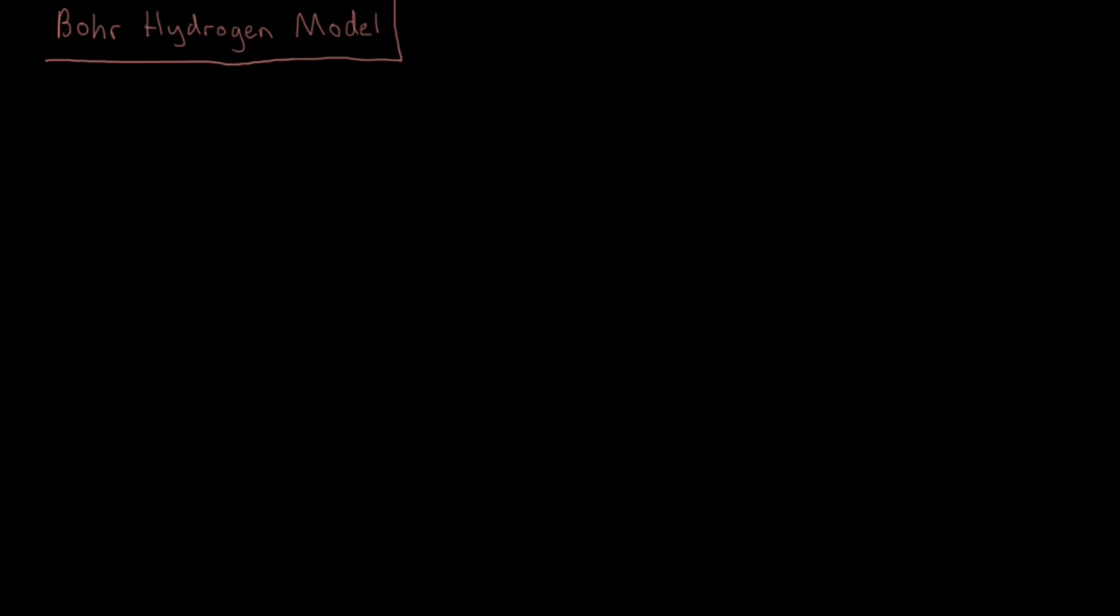But we're going to go into more detail here about how that was developed and what it means. So let's look at that model. First we're going to have a proton, our positively charged proton just going to sit fixed in the middle of the atom, the only thing in the nucleus for this element. And then there's going to be a single electron, negatively charged, which is going to be rotating around that proton in some orbit.